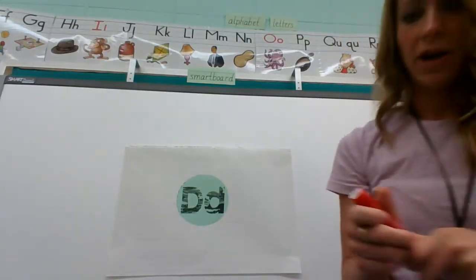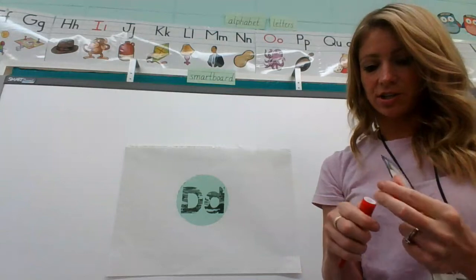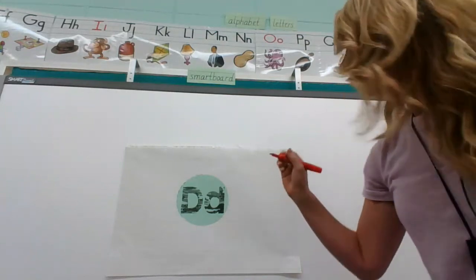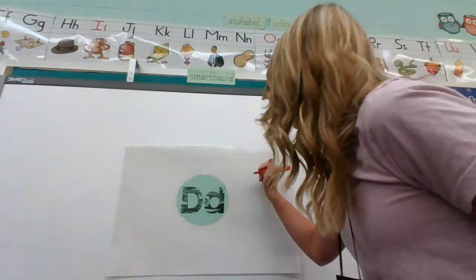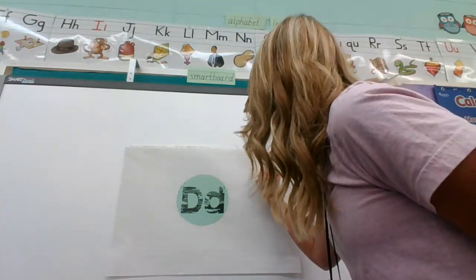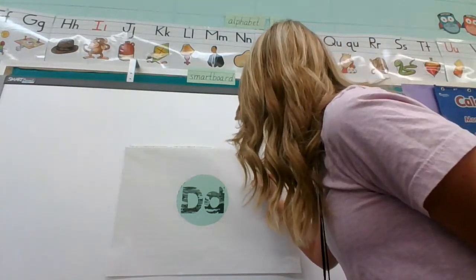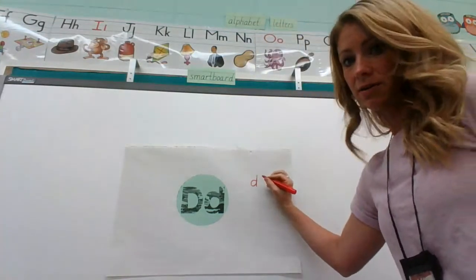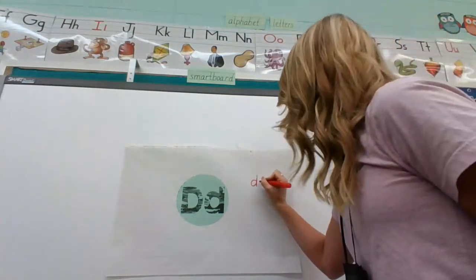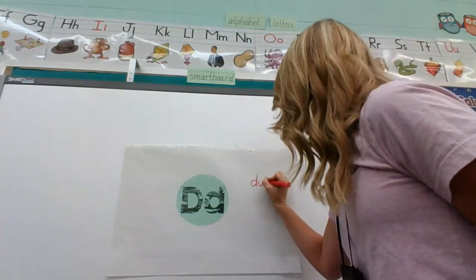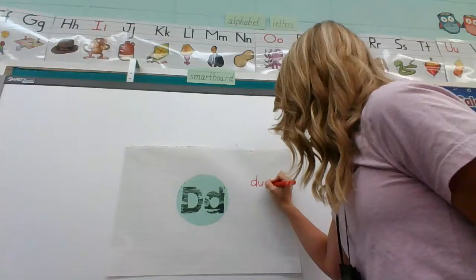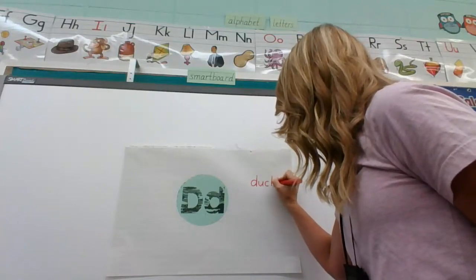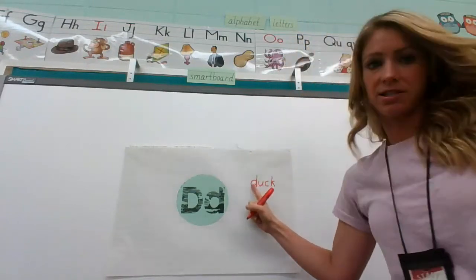I'll take my marker — it's actually a smelly marker today, cherry! And let's pull back around, up and down to write my little D. And I'm going to write the word duck. Duck — it says D.